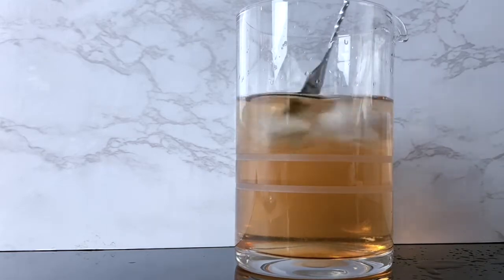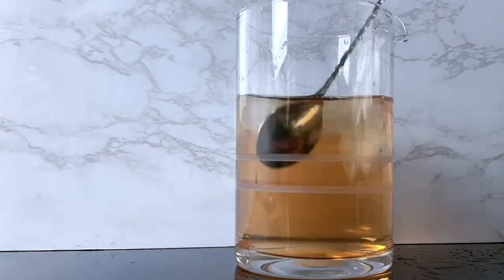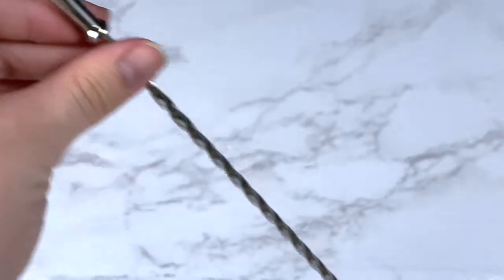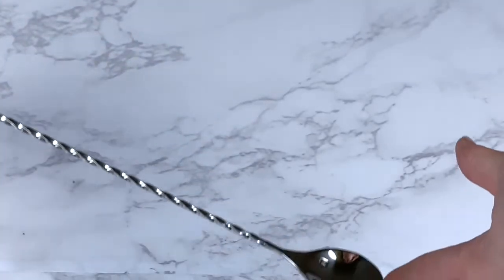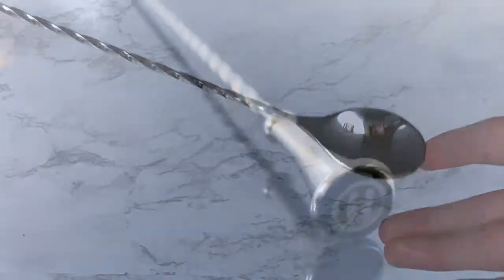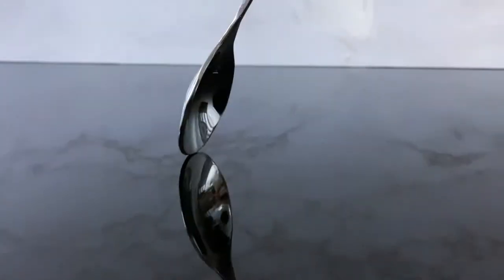From stirring layered cocktails to micro-muddling little jobs, the bar spoon can do it all. It has the ideal shape and size for mixing with its 12-inch twist and flat end and perfect balance, contrary to other bar spoons you may have used before.